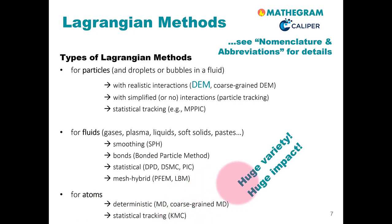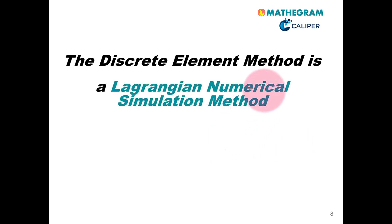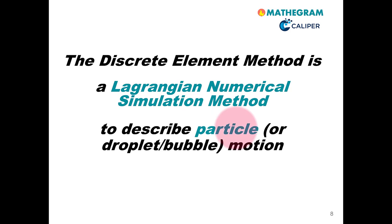As you already see, there is a huge variety of Lagrangian methods and they have had a huge impact on our daily life in research. Let us now continue with the definition of the discrete element method. The DEM is a Lagrangian numerical simulation method to describe particles or fluid particles, and those fluid particles we typically call droplets or bubbles. I hope you have enjoyed this very first part of this MOOC. See you in the next unit.